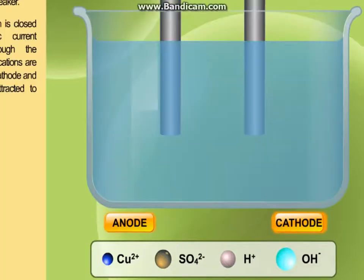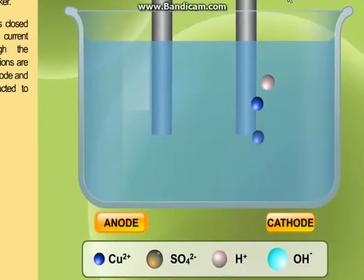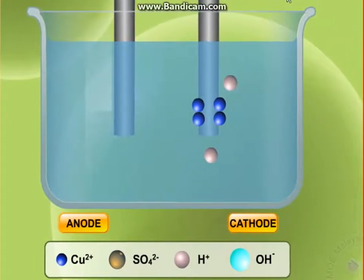As electric current passes through the solution, all cations, copper-2 and hydrogen ions, move to the cathode.